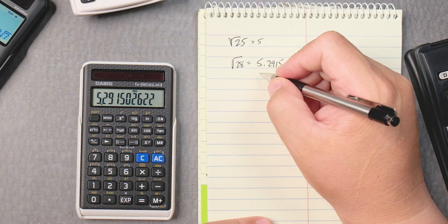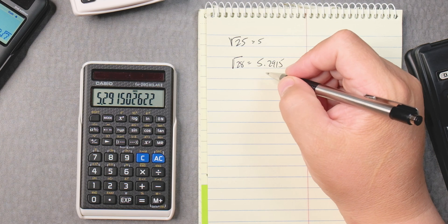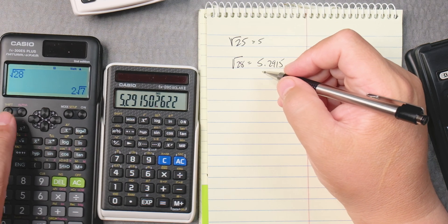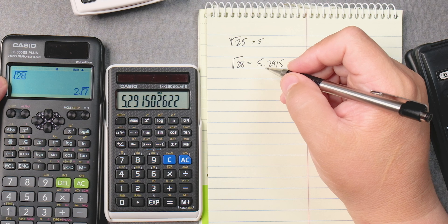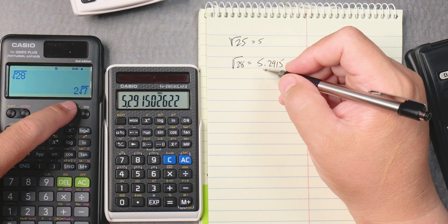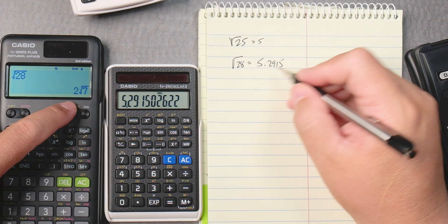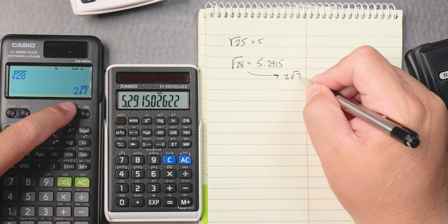This answer cannot be reduced like other calculators can. Like for example, this one, when you take the square root of 28, it reduces it to 2 square root of 7, right? This is reduced to 2 square root of 7.